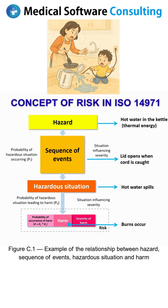Today I will explain the concept of risk in ISO 14971 using the example of spilling hot water from an electric kettle. This diagram shows the flow from the top, starting with the hazard, which is the potential source of harm, then a sequence of events occurs, leading to a hazardous situation, and finally resulting in harm.